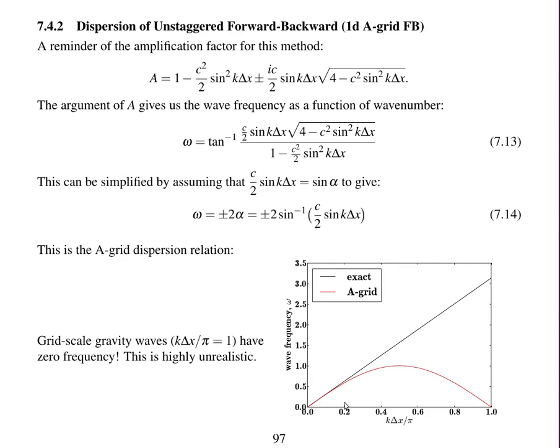The analytical solution has got wave frequency proportional to k delta x, this line here. So this is increasing wave number, so these are higher and higher wave number waves. Whereas the A-grid, the unstaggered method, gives this dispersion relation here.